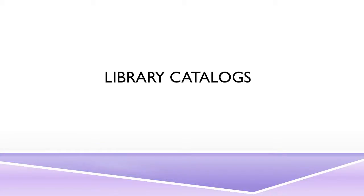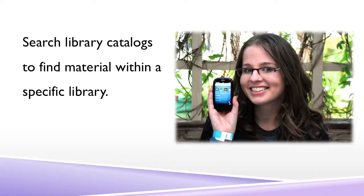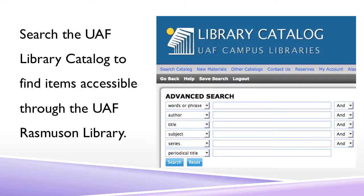In this tutorial, you'll learn about the basics of library catalogs. Search library catalogs to find material within a specific library. For example, you would search the UAF library catalog to find items accessible through the UAF Rasmussen Library.